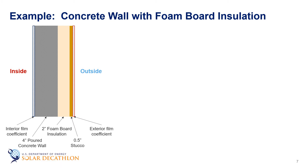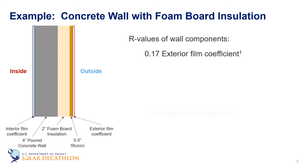So when we really look at the wall from the outside to the inside, we have the exterior film coefficient, the half inch of stucco, the two inches of foam board, the four inches of concrete, and then the interior film coefficient. We need R-values for each of these layers. The R-value for the exterior film coefficient is 0.17 and the interior is 0.68. Remember, this accounts for a small amount of stagnant air on the inside and outside of the wall, and that stagnant air is an insulator.